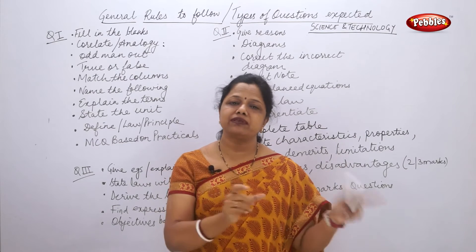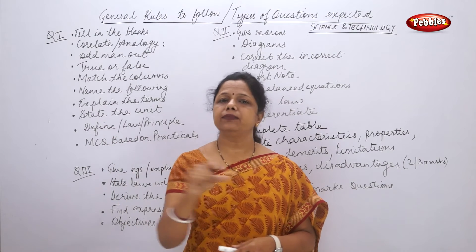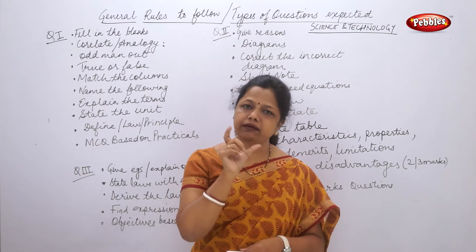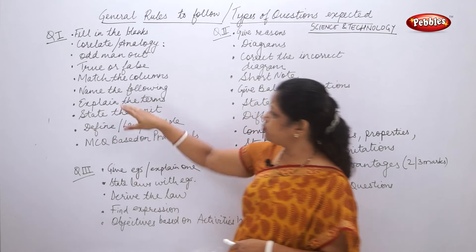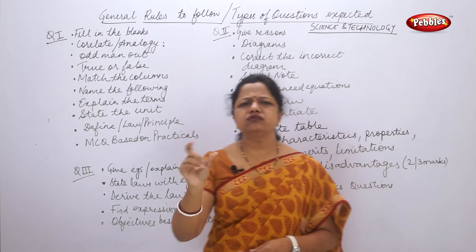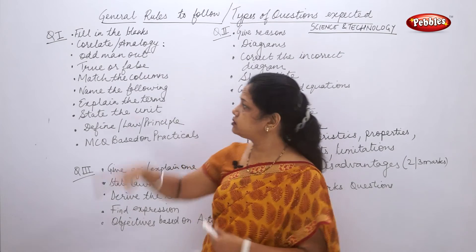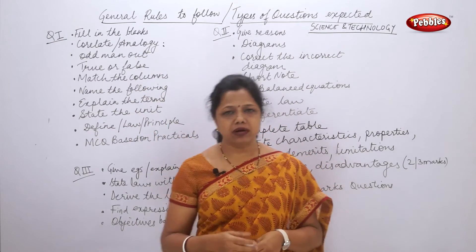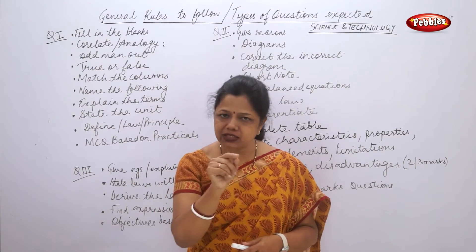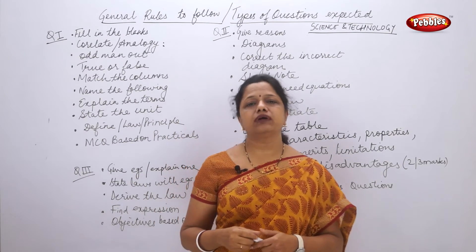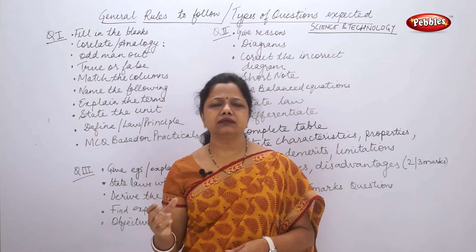For 'name the following' — some sentences will be given and you have to name them. Write the complete sentence, make a dash, and write the name. For 'explain the terms' — some terms will be given and you have to explain them in two or three lines, as this is generally a one or two mark question. Write the word, make a dash, and write two or three sentences explaining what the term means.